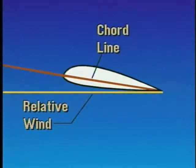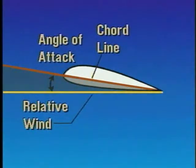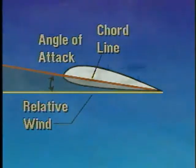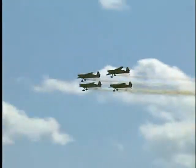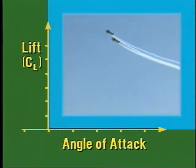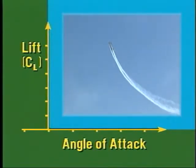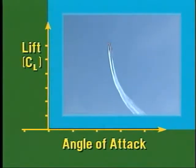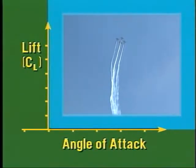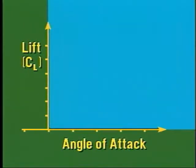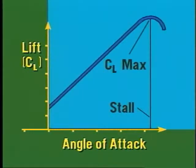The angle formed between the relative wind and the chord line is called the angle of attack. A way to measure lift as it relates to angle of attack is the mathematical expression coefficient of lift, or CL, which is determined by wind tunnel tests and is based on the design of the airfoil. Each airplane has an angle of attack where maximum lift occurs. This point is known as CL max.